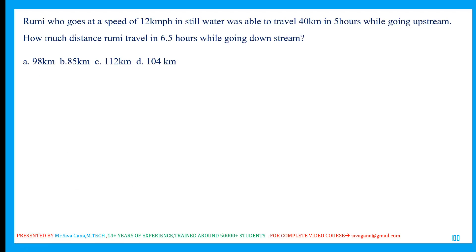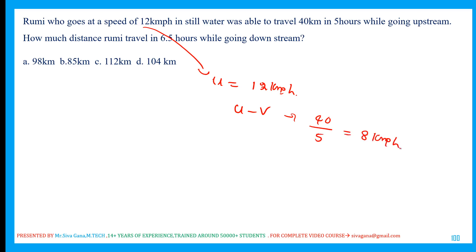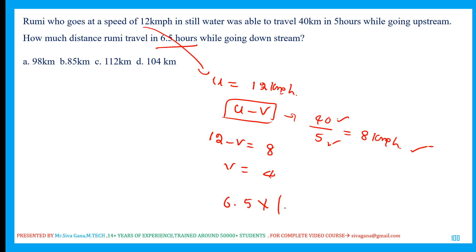Rumi goes at 12 km/h in still water and traveled 40 km upstream in 5 hours. Upstream speed = 40/5 = 8 km/h = U − V. So 12 − V = 8, giving V = 4 km/h. Downstream speed = U + V = 12 + 4 = 16 km/h. Distance in 6.5 hours downstream = 6.5 × 16 = 104 km.